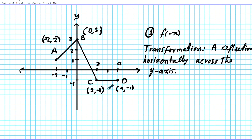Take a look at this graph. Let's go ahead and graph f of negative x — we'll just focus on the points, graph the points, and then connect the lines. Let's start with point A: it is two units to the left, so we're going to reflect horizontally two units to the right. That will take us from the second quadrant to the first quadrant. We'll call that point A prime.